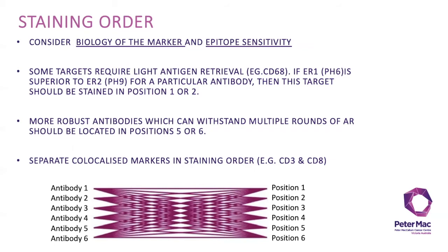If you don't have any information available, you may choose to take an exhaustive approach and test each target in each position — all 36 positions depicted in the diagram below. However, depending on the depth of experience with each target and antibody, it may be possible to eliminate the need to test perhaps the two most delicate antigens in anything other than positions one and two.